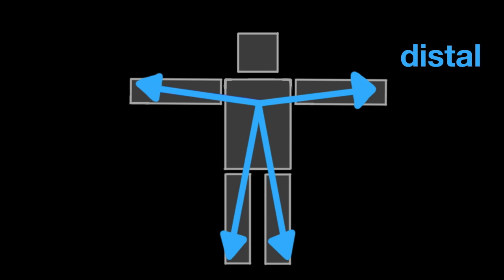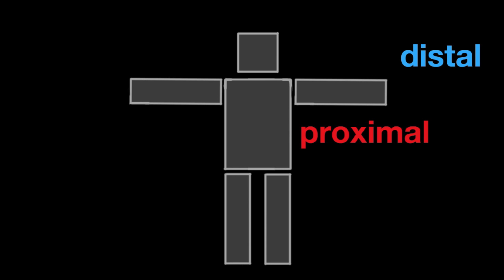Other words we need to know are proximal and distal. Proximal is when something is closer to the center of the body. Distal is when something is more distant, or farther away from the center of the body. We will come back to these words in a second.